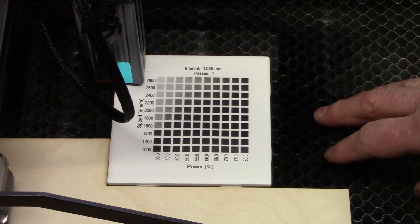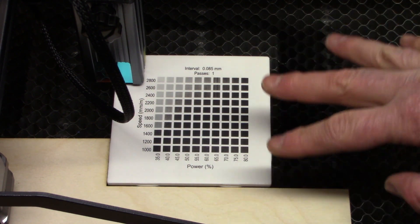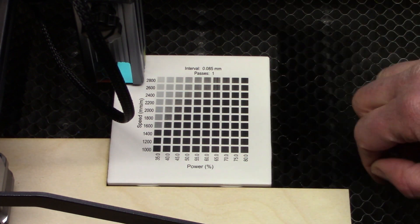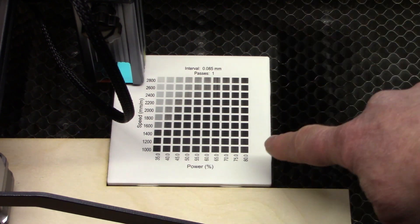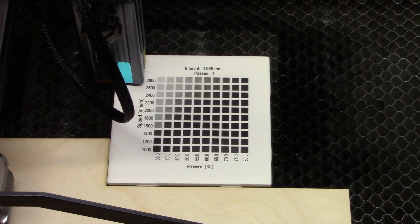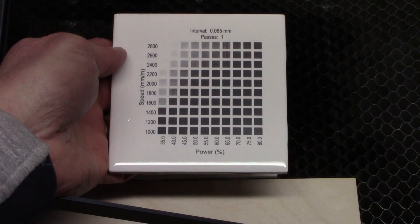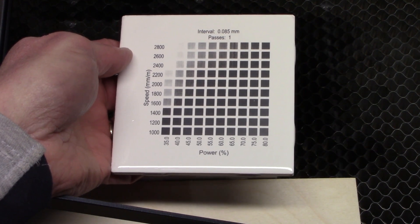Once we get this cleaned up, we'll see what actually worked. It always looks better before it gets cleaned. Once it's clean though, we'll get a good idea of what powers work best on this laser for doing white tiles. So let's go get that cleaned up and take a look at it.